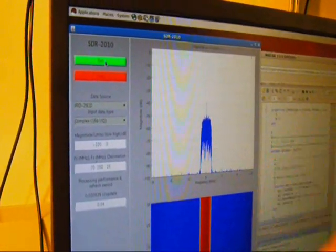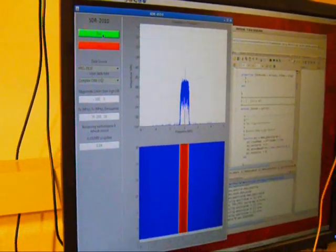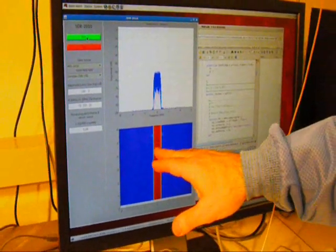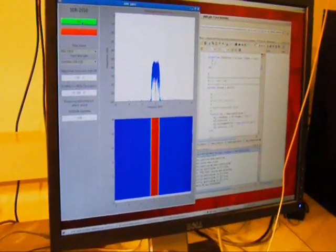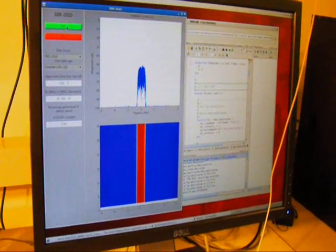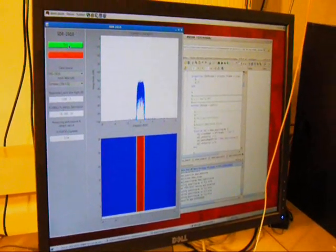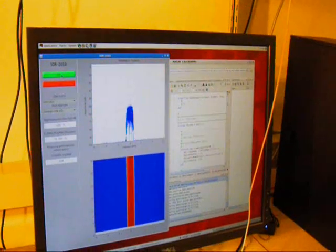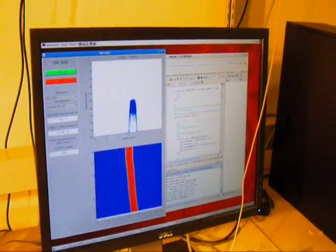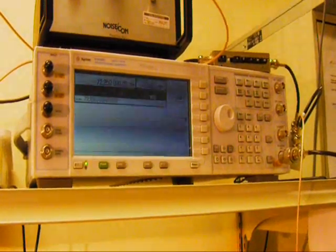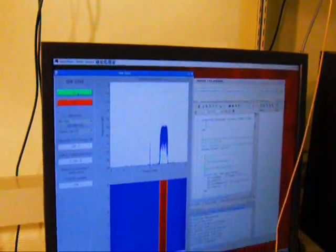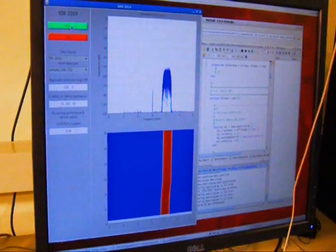And so now you can see the signal on the spectrum analyzer display. We are also using a spectrogram, which is scrolling upwards, and so that gives you the ability to detect signals over time. So, I'm just going to change the frequency here so you can see what happens when you move the frequency. You can see that the signal changes on the spectrum analyzer display and also on the spectrogram.